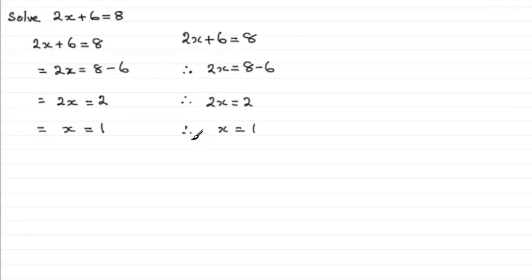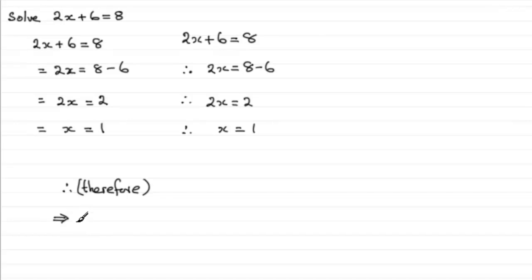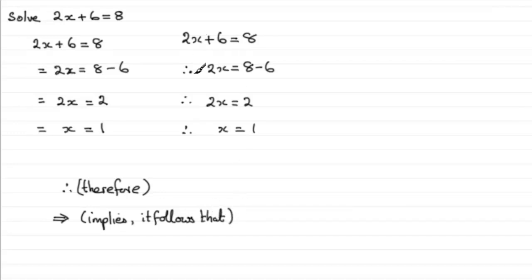You're not going to lose marks if you leave the therefore symbol out in any exam, but it does make it more readable. I've introduced you to this symbol — it means 'therefore.' There's also another symbol you could use in place of 'therefore' in a situation like this — its proper name is 'implies,' and you can think of it as meaning 'it follows that.' So it's a bit like saying so or therefore. If I wrote 2x plus 6 equals 8 and I wrote this implies symbol, I can read it as: it follows that 2x must equal 8 minus 6, and again it follows that 2x equals 2, and so on.